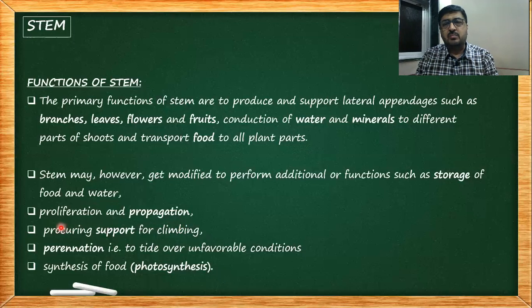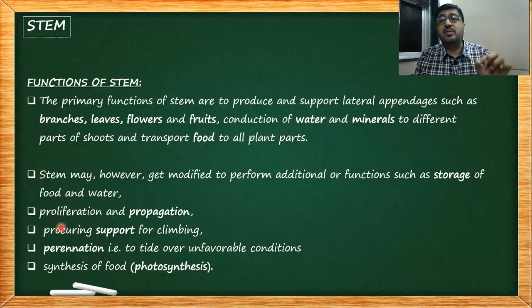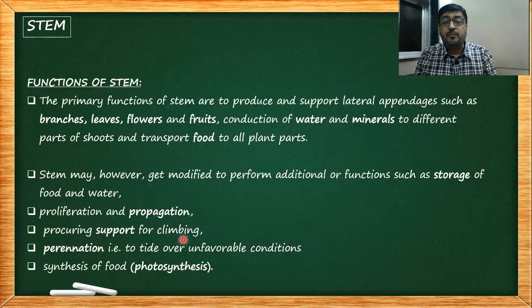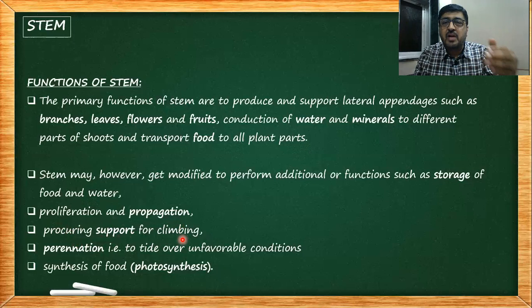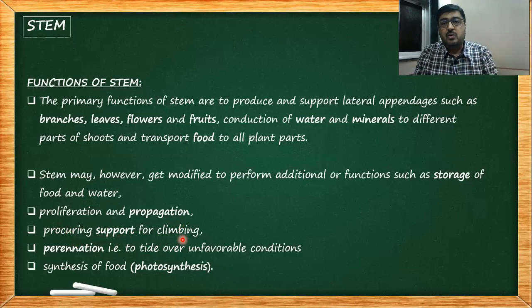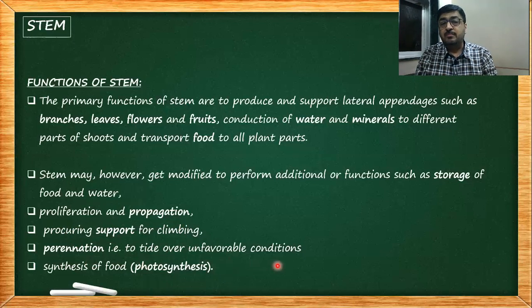Other secondary functions include proliferation and propagation — that is, vegetative reproduction. Another modification is procuring support for climbing: if the stem is weak, it may produce additional structures to hold on to something so the plant can stand. There is also perination — the ability to tide over unfavorable conditions. Whenever conditions are not favorable, the stem might go underground and remain dormant until conditions become favorable.